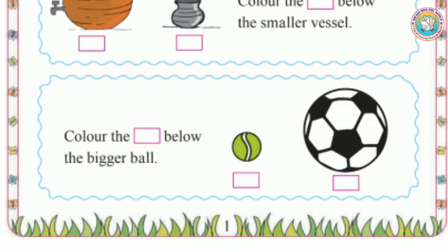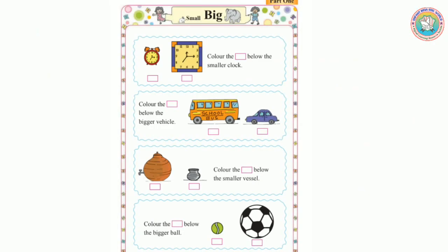Now you understand the concept of big and small. Something which is very huge, very big in size, that is called big. Something which is very tiny in size, that is called small. I hope you enjoyed learning this concept.